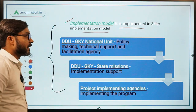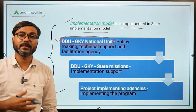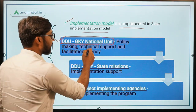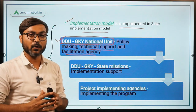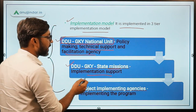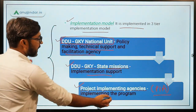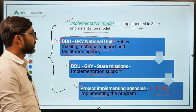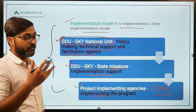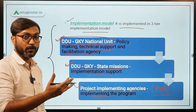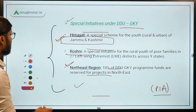Regarding the implementation model, there is a three-tier implementation model. At the national level there is the DDU-GKY National Unit, whose work is policy making, providing technical support, and facilitation. DDU-GKY State Missions provide implementation support in the states. Project Implementing Agencies, known in short as PIAs, are the ones who finally implement the program on the ground. This is the hierarchy through which the scheme is implemented.